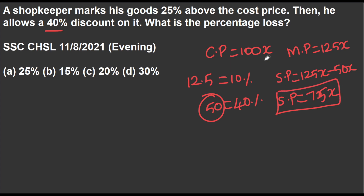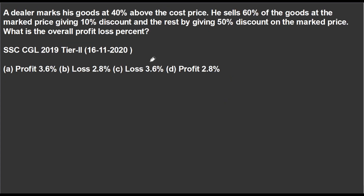So now cost price is 100 and selling price is 75. So the loss is 25x. That's 25% loss. So that's the approach for this sum.